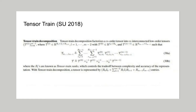Tensor train decomposition factorizes an M-order tensor into M interconnected low-order tensors, where the R values are known as tensor train ranks, which control the trade-off between complexity and accuracy of the representation. With tensor train decomposition, a tensor is represented by M entries of lower-rank tensors.